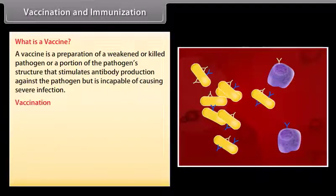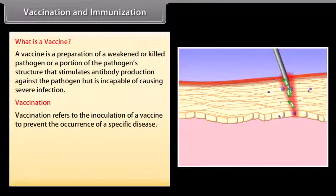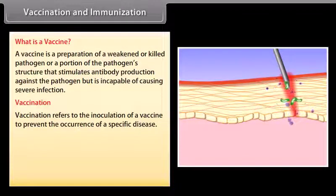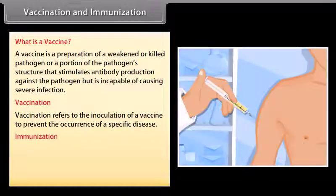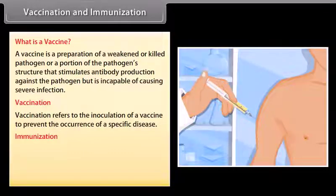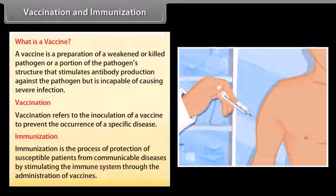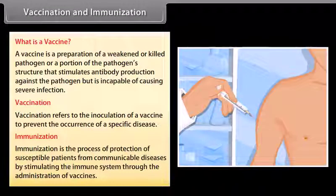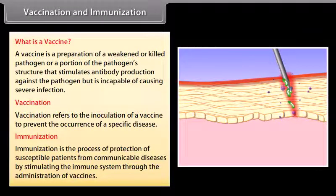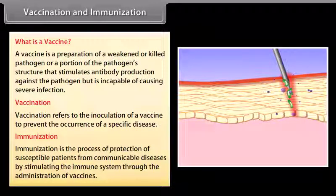Vaccination refers to the inoculation of a vaccine to prevent the occurrence of a specific disease. Immunization is the process of protection of susceptible patients from communicable diseases by stimulating the immune system through the administration of vaccines.